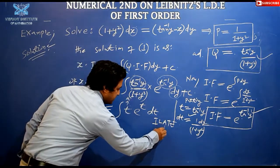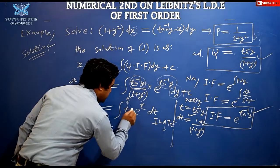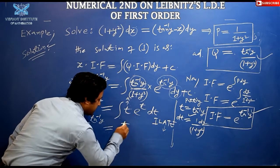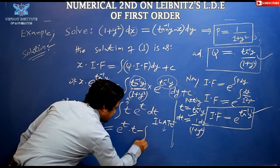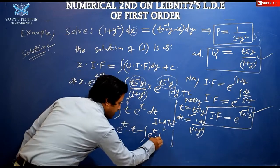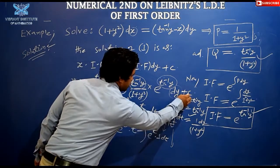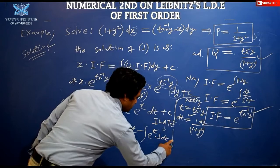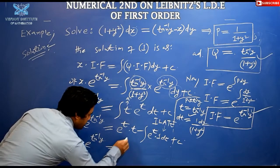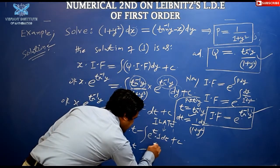Applying integration by parts: ∫ t · eᵗ dt = t · eᵗ − ∫ eᵗ · (dt/dt) dt = t · eᵗ − eᵗ + c. So x · e^(tan⁻¹y) = t · eᵗ − eᵗ + c.